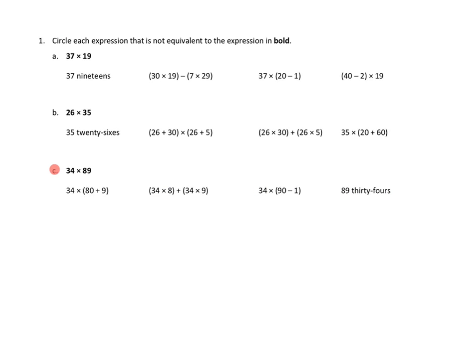Let's take a look at a couple problems tonight. Problem number one, I'm going to go with the more difficult one. The question is to circle each expression that is not equivalent to the expression in bold. When we go to 1c, we're asked to find out which of these are not equivalent to 34 times 89.